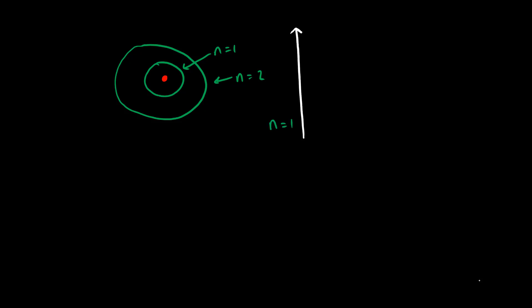So n equals 1, the first shell, is at the most negative energy — the lowest energy. As we move up to the second shell, we're at a little bit higher energy, but it's still negative — just less negative. This means that an electron in the second shell is not interacting with the nucleus as strongly as an electron in the first shell. And we use this to introduce the idea known as the quantization of energy.